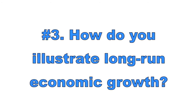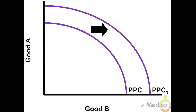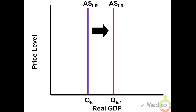Number three: how do you illustrate long-run economic growth? Long-run economic growth occurs when there is an increase in real GDP or real GDP per capita over time. The main causes are: one, increased quantity of economic resources; two, improved quality of economic resources; three, improved education and training; four, increased productivity and new technology. You can illustrate this as an outward shift of the production possibilities curve, or a rightward shift of the long-run aggregate supply curve.